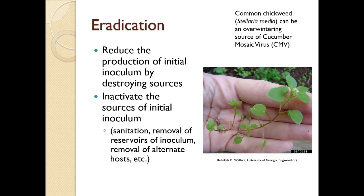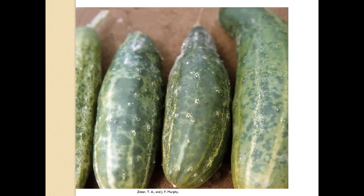Eradication is reducing the production of initial inoculum by destroying or inactivating sources through sanitation, removal of reservoirs, and removal of alternate hosts. For example, common chickweed — a winter annual — can be an overwintering source of cucumber mosaic virus, and here is what that disease looks like on cucumbers.